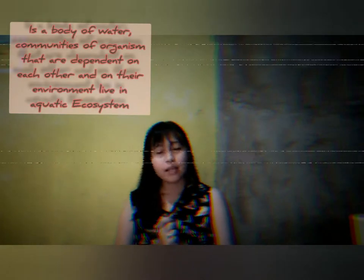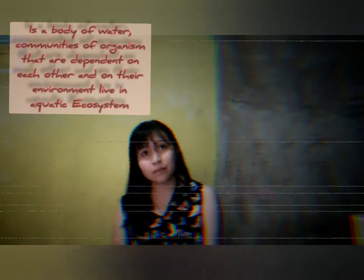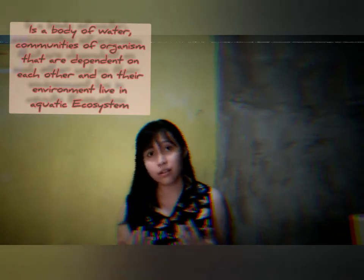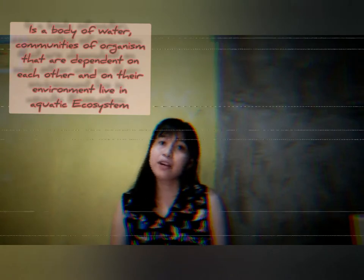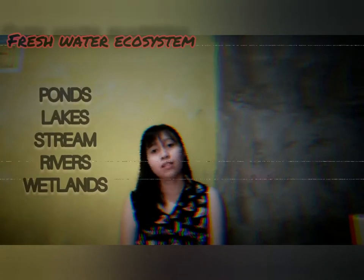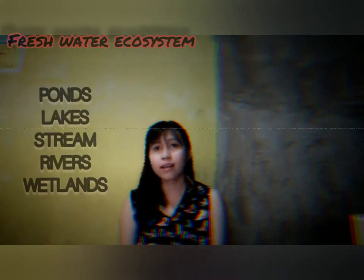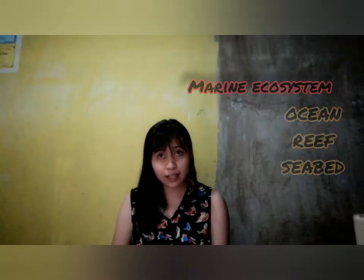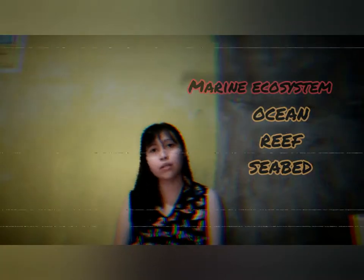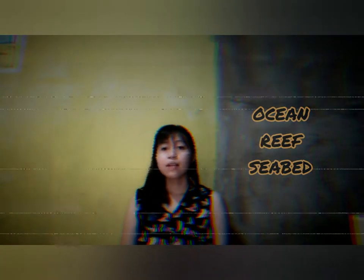Before anything else, let me give you some information about aquatic ecosystems. An aquatic ecosystem is a body of water where communities of organisms are dependent on each other and on their environment. There are two types of aquatic ecosystems: first is freshwater, which includes ponds, lakes, streams, rivers, and wetlands; and second is marine ecosystem, which includes ocean, reef, and seabed.